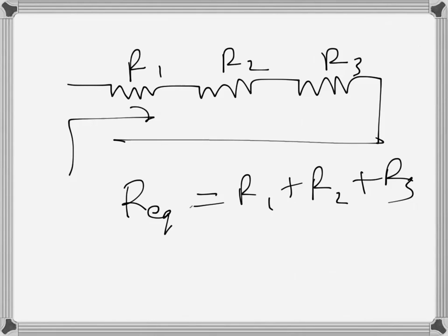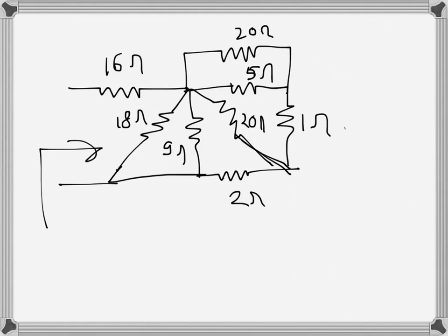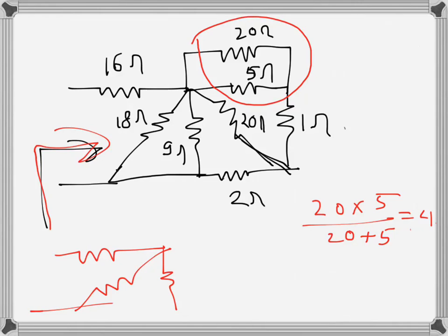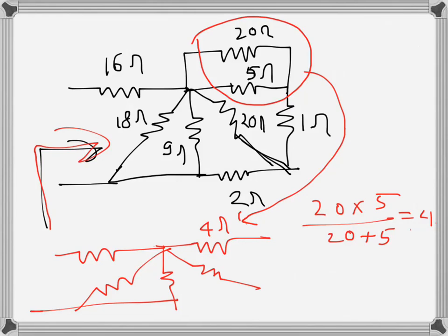I'll do a problem now. We need to find the equivalent resistance. First, we observe that two resistors are in parallel, so the equivalent of 20Ω and 5Ω will be 20 times 5 over 20 plus 5 — that's 100 over 25, which is 4Ω. I'll redraw the circuit: there's a 9Ω, and instead of the 20 and 5, it's now just 4Ω as the equivalent.